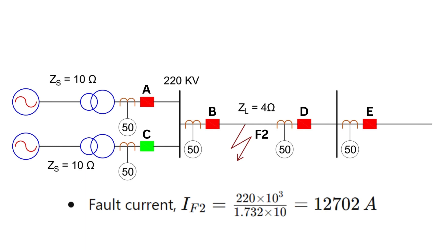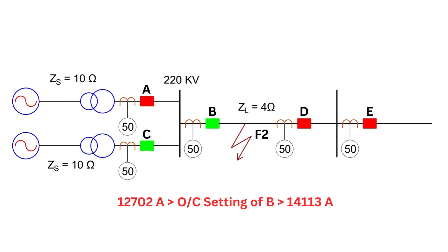Therefore, for the protection of the transmission line, the setting of relay at breaker B shall be kept less than 12,702 amperes to trip immediately. But for the earlier case, we saw that the overcurrent setting of relay at breaker B should be more than 14,113 amperes to not trip for through fault, which is impractical.